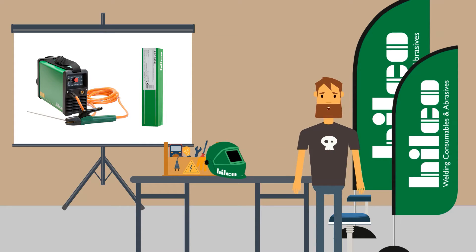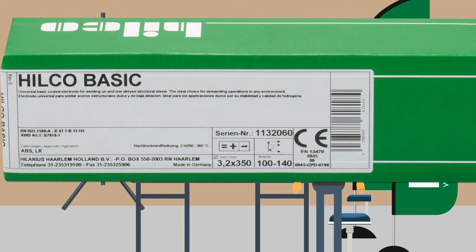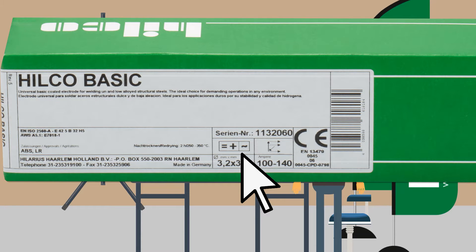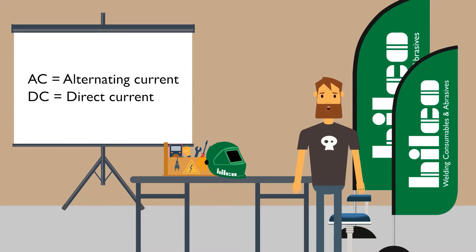When checking your welding machine and pack of electrodes, you will see that they are labeled AC or DC. This describes the polarity of the welding machine's current. AC stands for alternating current, while DC stands for direct current.